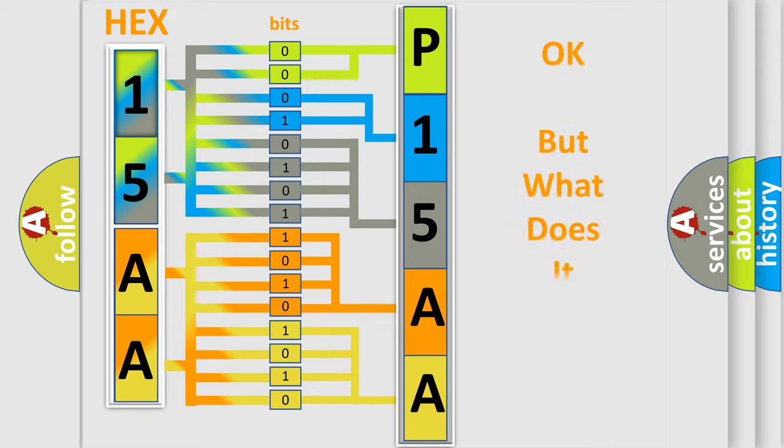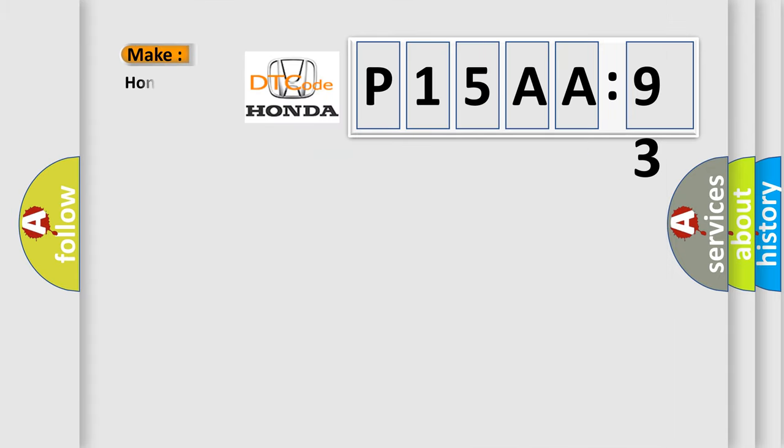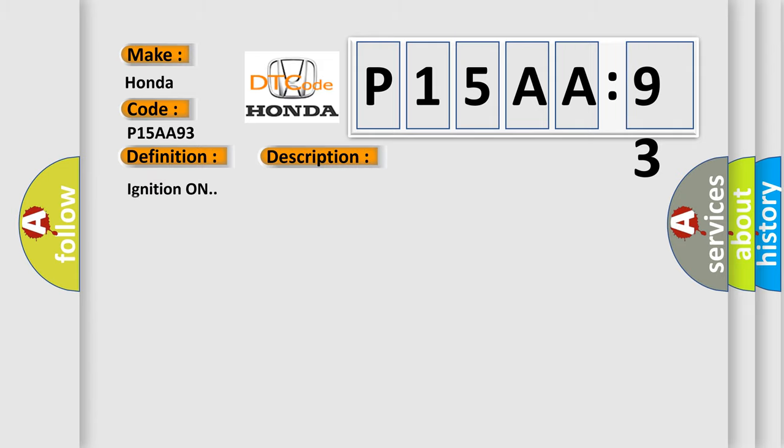The number itself does not make sense to us if we cannot assign information about it to what it actually expresses. So, what does the diagnostic trouble code P15AA93 interpret specifically for Honda car manufacturers? The basic definition is yaw rate circuit. And now this is a short description of this DTC code: ignition on.